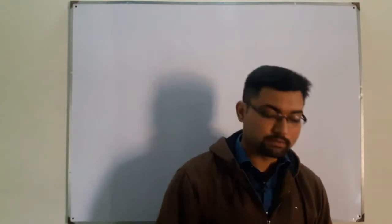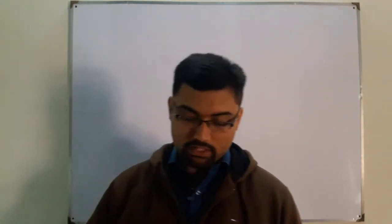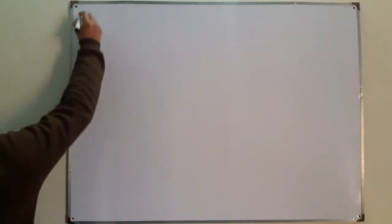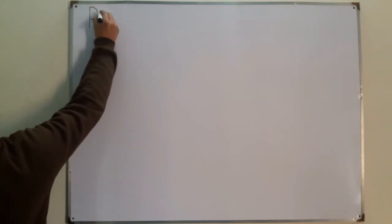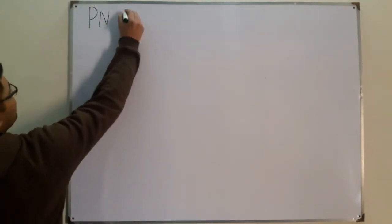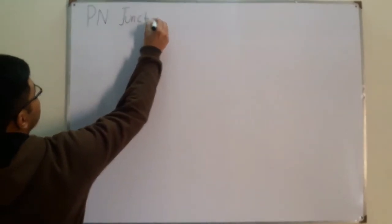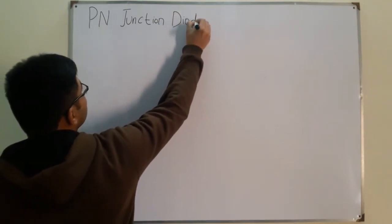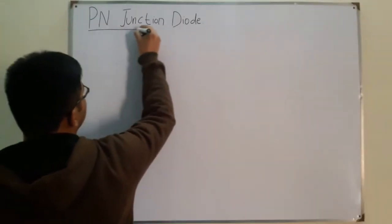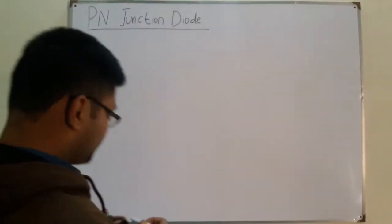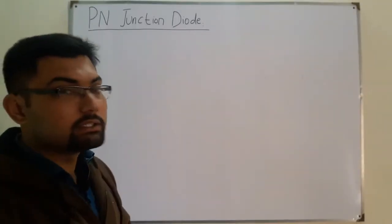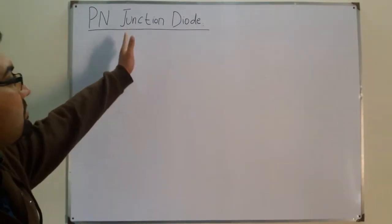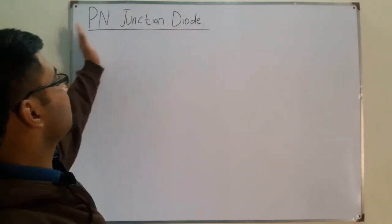Bismillah ar-Rahman ar-Rahim, Assalamu alaikum. Today we cover the next topic: the PN Junction Diode, a very important topic to understand. As the name suggests, we have a P type material and an N type material. A junction means a boundary in between them, and diode is the name of this combination.